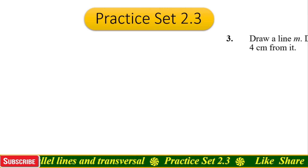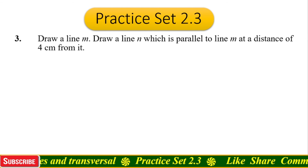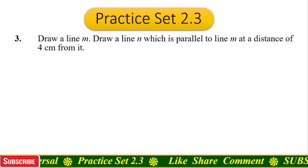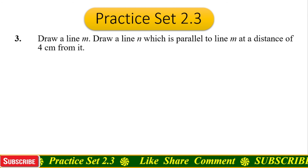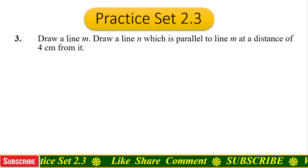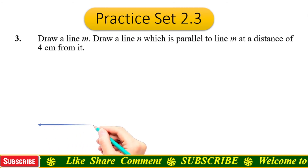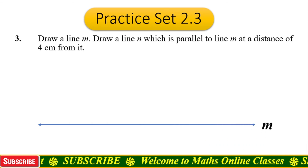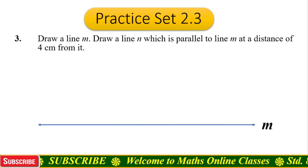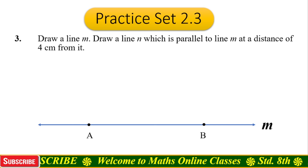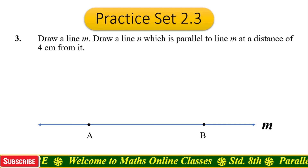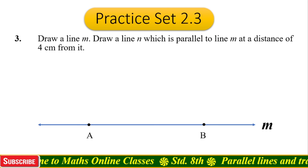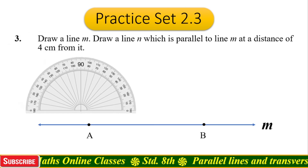Question number three: Draw a line m, then draw a line n which is parallel to line m at a distance of four centimeters from it. Draw a line and name it as line m. Now take two points anywhere on line m and name them as point A and point B. Take a protractor and keep it on point A.